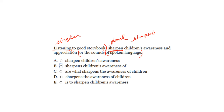Let's eliminate answer choices that use 'sharpen.' Looking at B: 'listening sharpens children's awareness and appreciation for sounds' — but note answer choice with 'are' is plural like 'sharpen,' so we need singular. The right answer is B: 'listening to good storybooks sharpens children's awareness of and appreciation for the sounds.' Notice the parallelism — another common SAT error. There's a nice balance to the sentence.